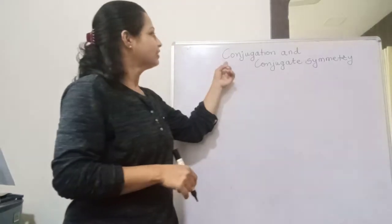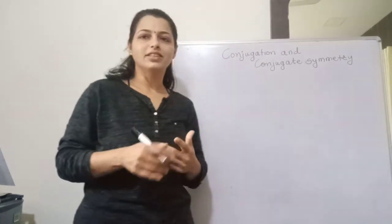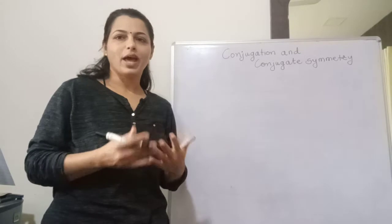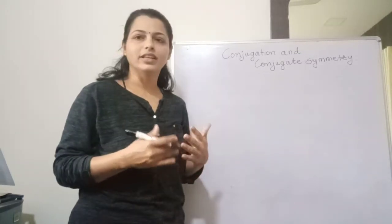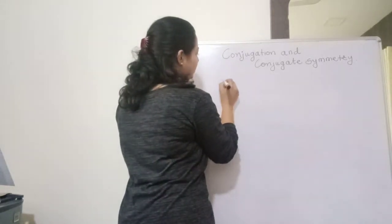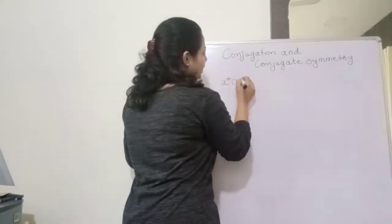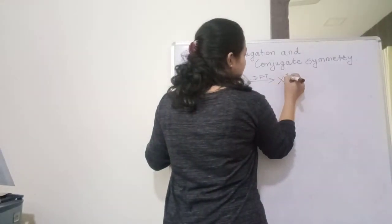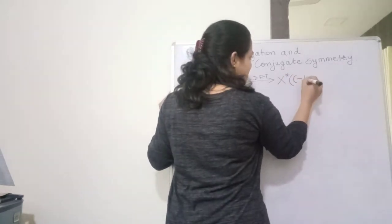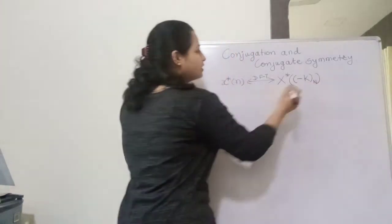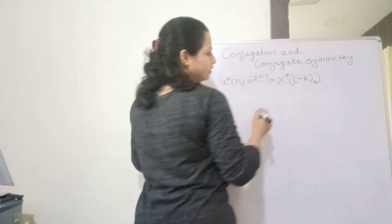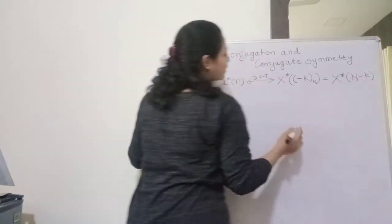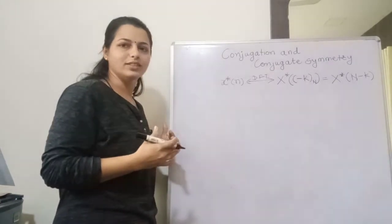We will see a very interesting property called the conjugation property of DFT, and with this we will also study conjugation symmetry — that is, symmetry properties of DFT. First, we will see what happens when we take the conjugate of x(n) while taking the DFT of this signal. Let us see the statement and then take proof of this property.